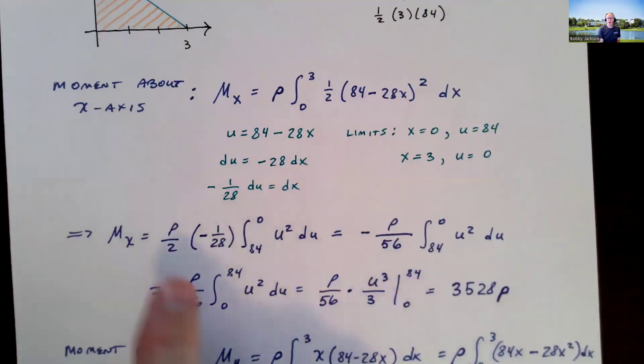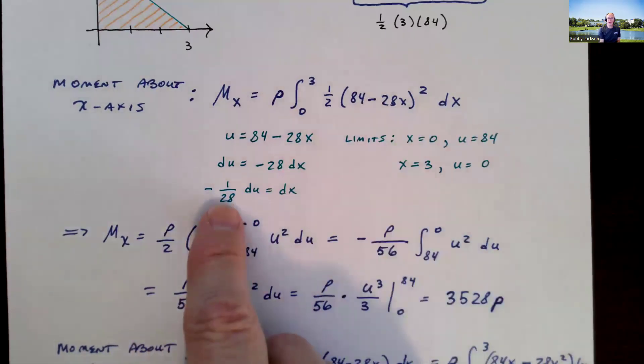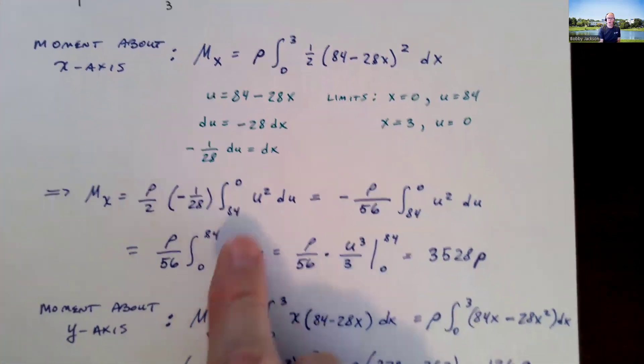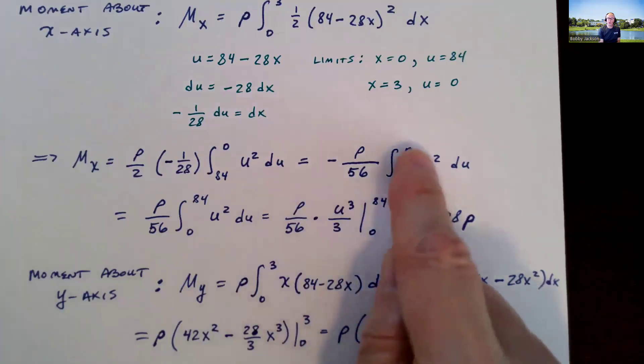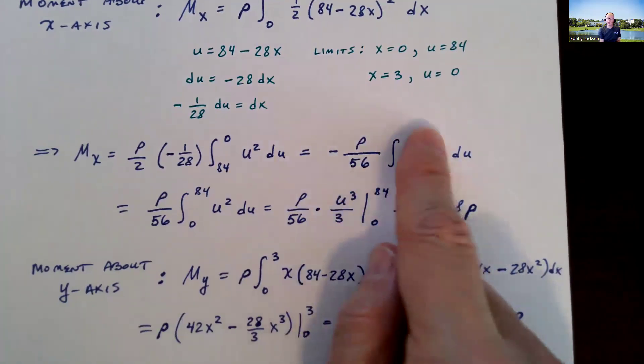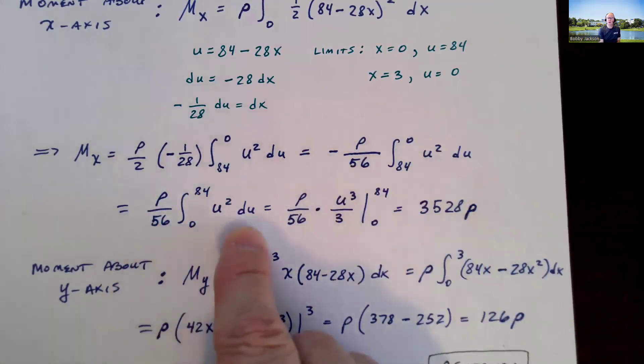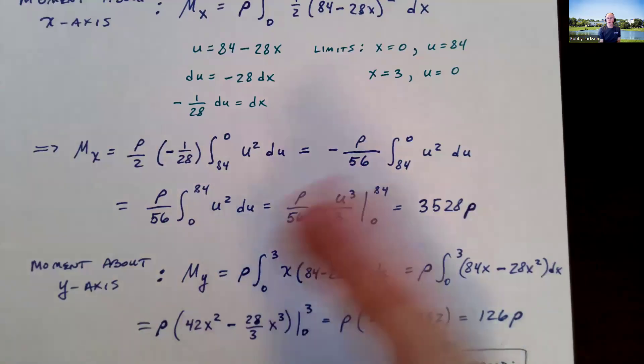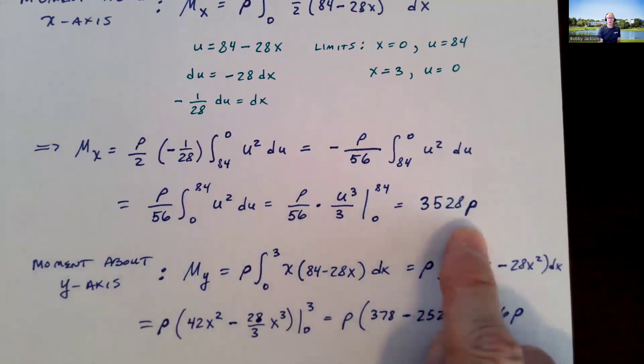So now I can do the change. I've got rho over 2. The dx is negative 1 over 28 du. This thing is the u squared. And our limits went from 84 to 0. So cleaning that up, 2 times 28 is 56. And if you're not comfortable with going from 84 to 0, you can flip them. Just change the sign. So this integral will be the same as this one here. And now the antiderivative of u squared is u cubed over 3. Plug in 84 for u. Plug in 0. You get 0. So simplifying that expression gives me this for my moment about the x-axis.